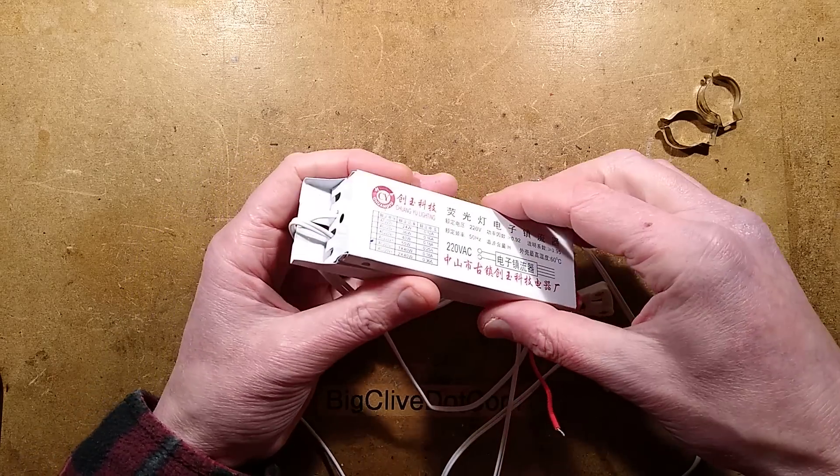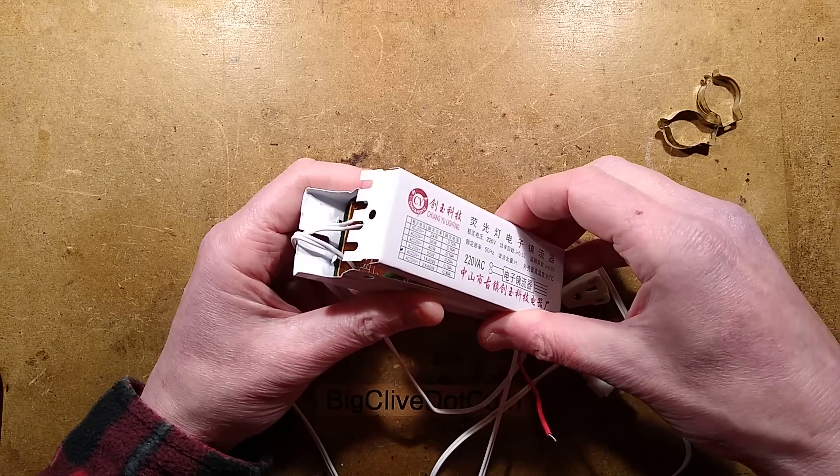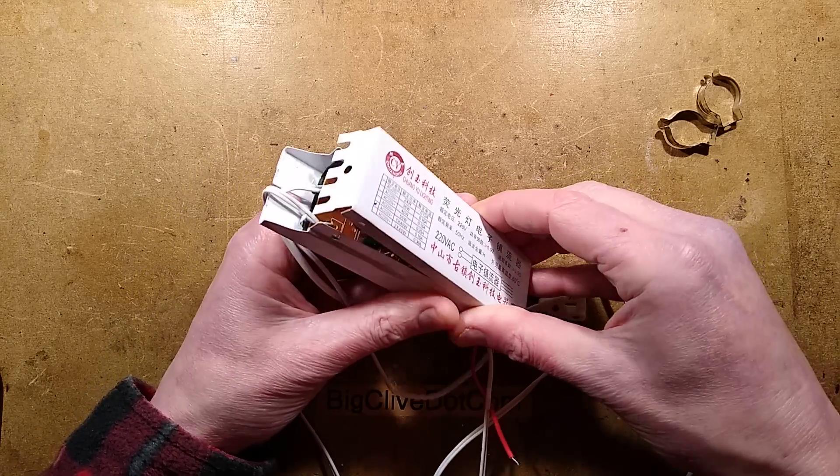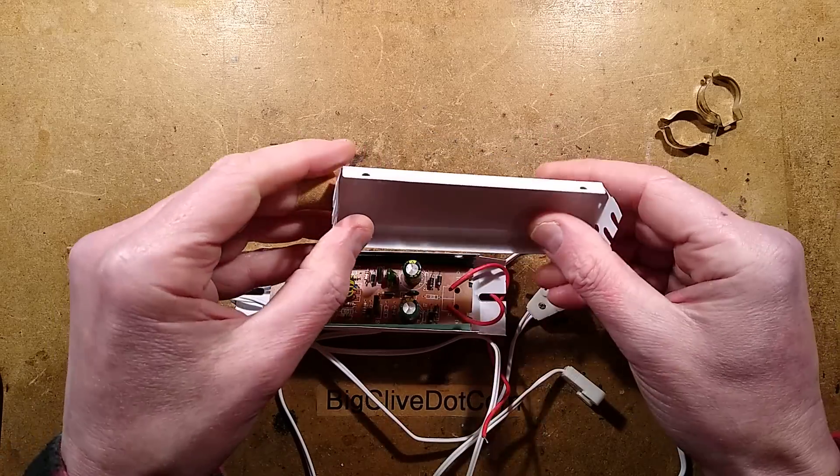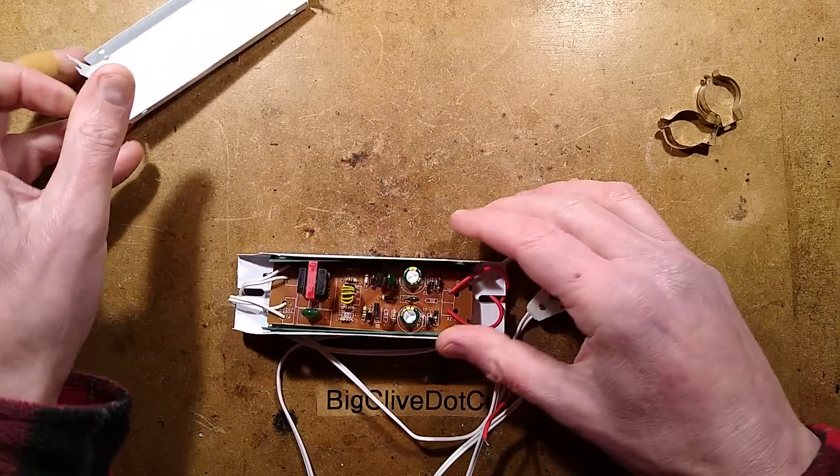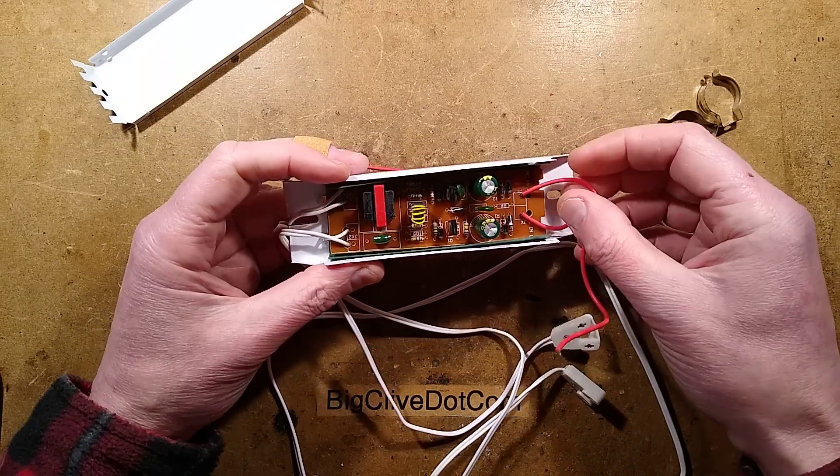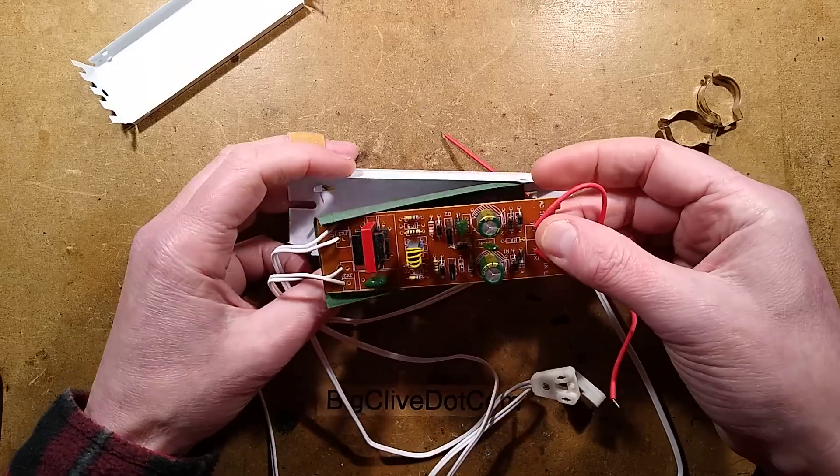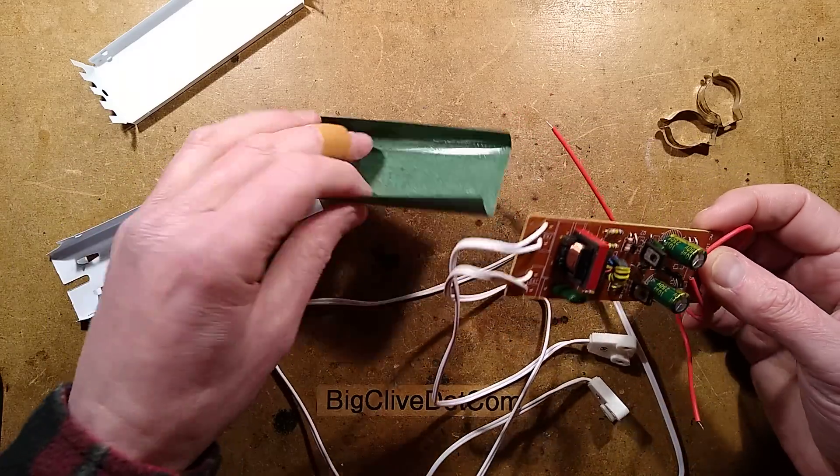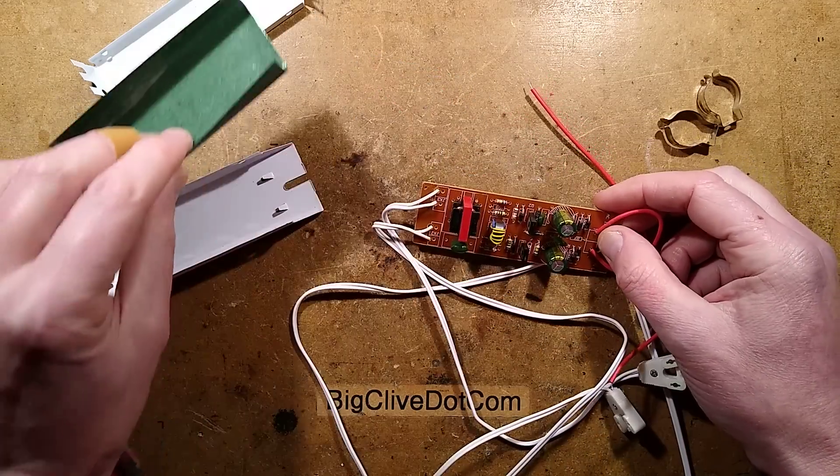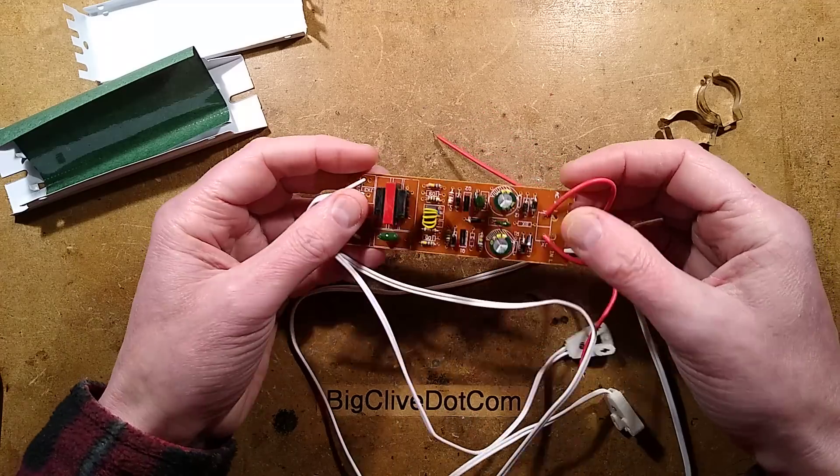However, the first thing I noticed about this is that it's super lightweight and flimsy. The cover unclips and is excruciatingly thin. Inside, we have the circuit board with a plasticised paper insulator at the back. It's very common construction for these things.